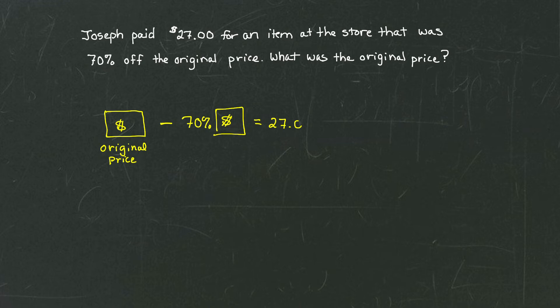So in my head, this is the picture that I'm thinking. I've got an original price, and then I'm going to subtract 70% of that original price, and that's going to give me $27. But let me fill in some of the boxes here with some unknowns. We can let X be our original price or our sale price of the item.